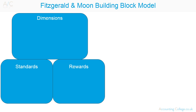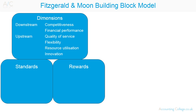The Fitzgerald and Moon Building Block Model suggests that performance measurements should be based on three building blocks: dimensions, standards, and rewards. Downstream dimensions include competitiveness and financial performance. Upstream dimensions include quality of service, flexibility, resource utilisation, and innovation.